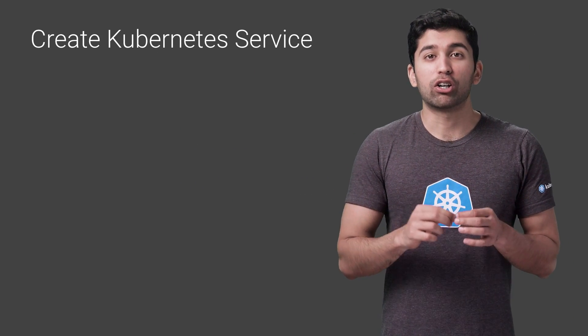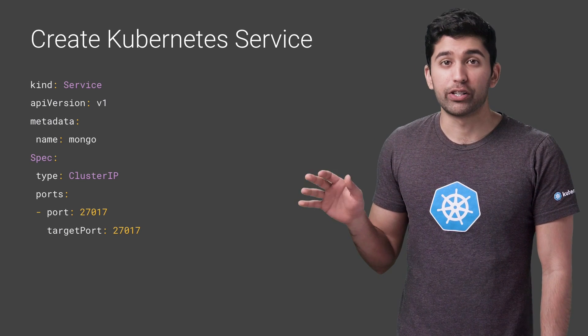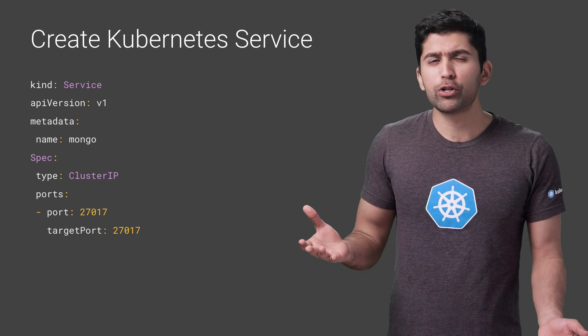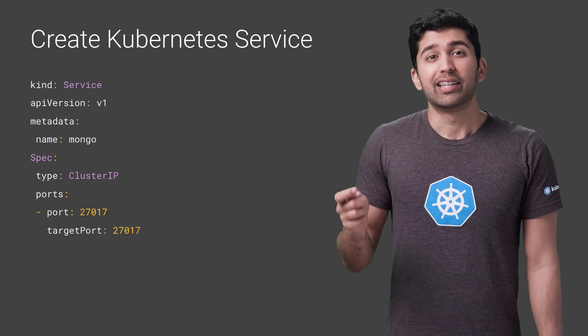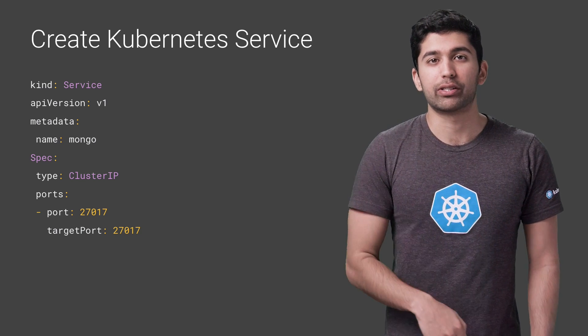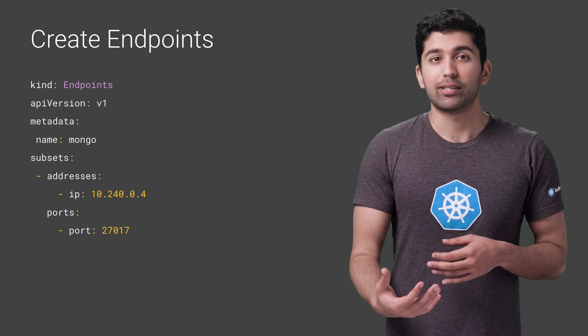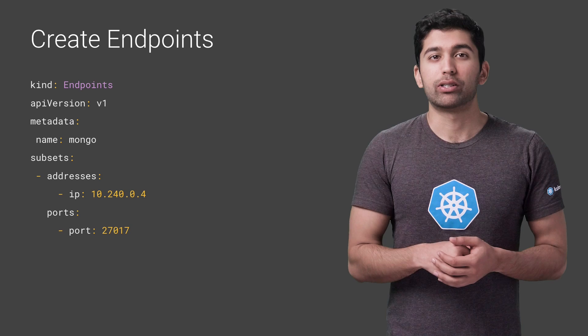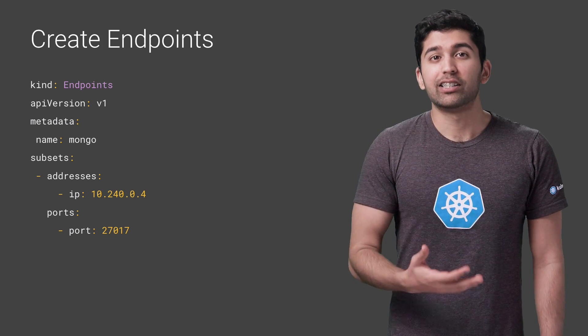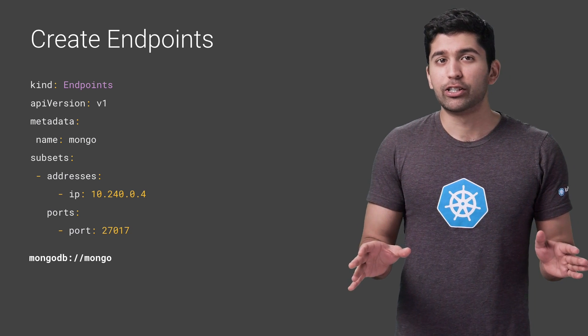The first step is to create a service. You may notice that there are no pod selectors for the service — this will create a service, but it really won't know where to send the traffic. This allows you to manually create the endpoints object that will receive traffic from the service. You can see that the endpoints manually defines the IP address for the database and uses the same name as the service. Kubernetes will use all the IP addresses defined in the endpoints as if they were regular Kubernetes pods.